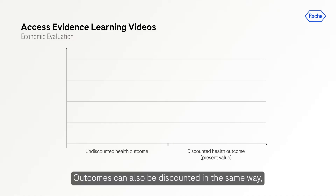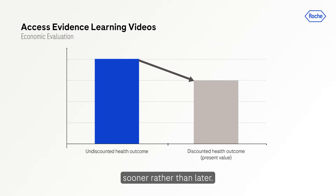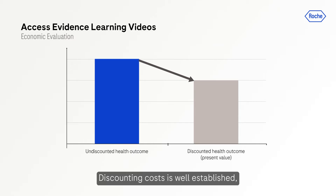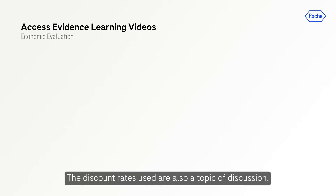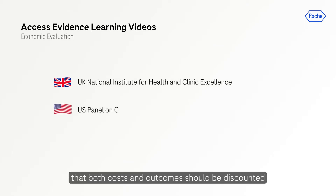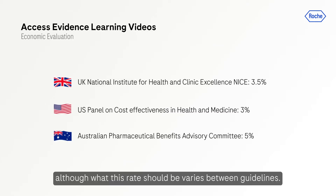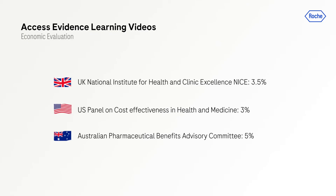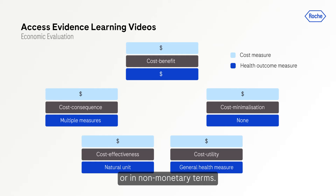Outcomes can also be discounted in the same way, on the basis that people prefer to receive benefits sooner rather than later. Discounting costs is well established, but whether outcomes should be discounted is widely debated. The discount rates used are also a topic of discussion. Many current guidelines recommend that both costs and outcomes should be discounted at the same rate, although what this rate should be varies between guidelines. Broadly speaking, economic evaluations either measure health outcomes in monetary terms or in non-monetary terms.